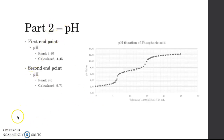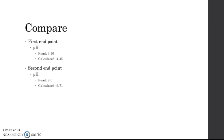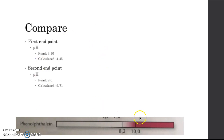Here we can see a comparison of the read and the calculated values, and both values are fairly close to each other, with one being a bit further off but otherwise looking pretty similar. Comparing part 2 with part 1, the first endpoint in part 2 was around pH 4.4, and from part 1 we learned that the endpoint would be around 4.4 — so there is a correlation. For the second endpoint, it occurred around pH 9 in part 2, and in part 1 the color change occurred between 8.2 and 10, so there is also a correlation between those two.